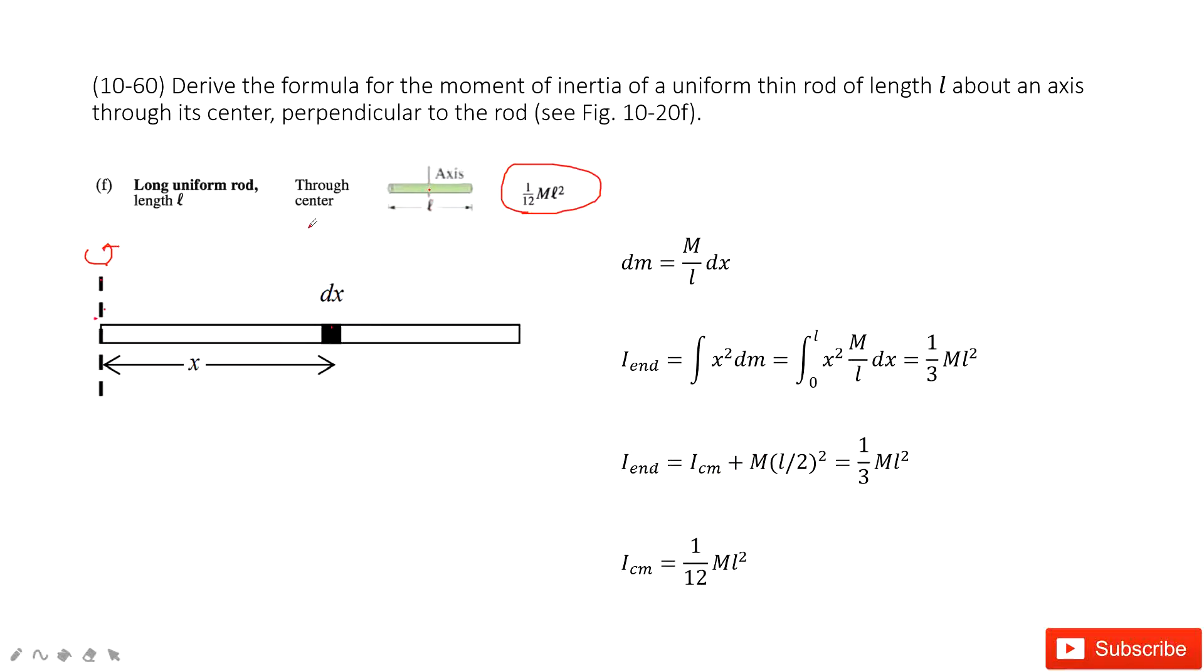We can find the center using the one end i_cm, the moment of inertia, plus the parallel axis theorem. The parallel axis theorem is the mass times l divided by 2, this distance. This distance is squared.